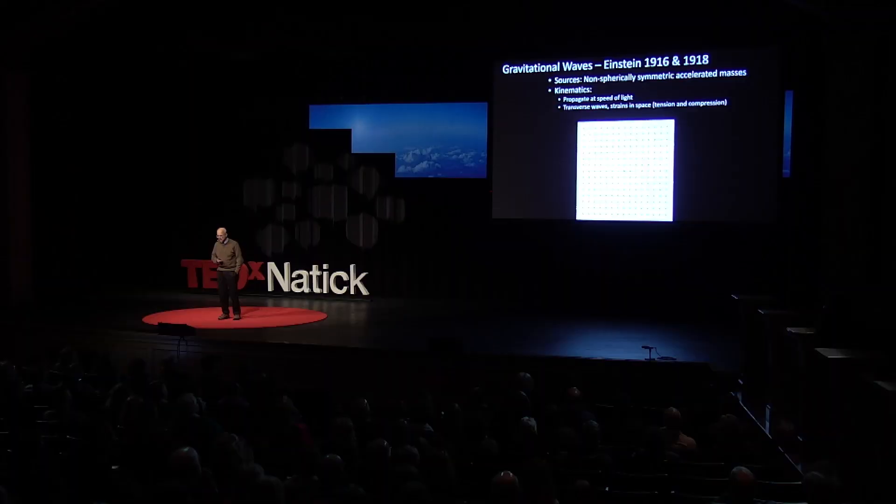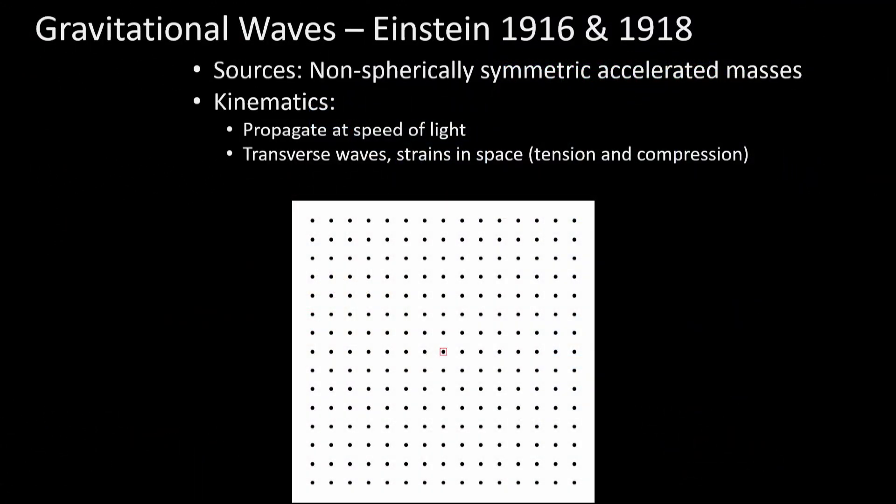It incorporates this idea, which was essential to what we discovered: gravitational waves. They are things generated by masses that accelerate — not things moving at constant speed, but things whose velocity changes with time. They propagate at the speed of light, which Einstein believed, and they are transverse waves.